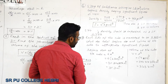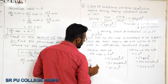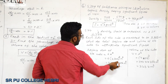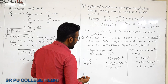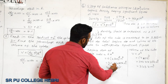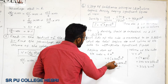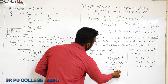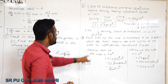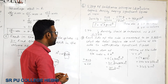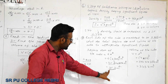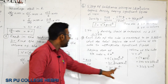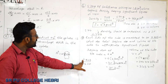Surface area = 6a² = 6 × (7.203)² = 311.299254 m². Rounding to four significant figures: the digit after 2 is 9, which is greater than 5, so the preceding digit rises by 1. Surface area = 311.3 m².